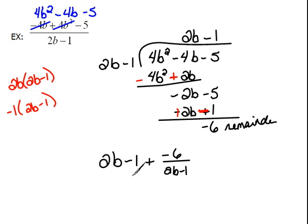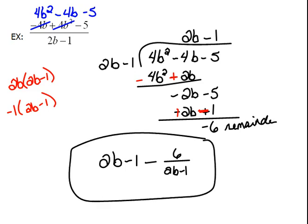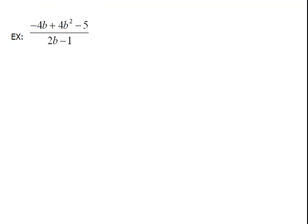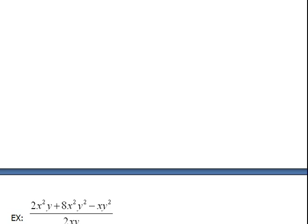Now you could either write it that way or you could write it as, instead of saying minus a negative 6, you could just say minus 6 over 2b minus 1. It is really and truly the same exact thing. Alright, let's look at the next one here pretty quickly.